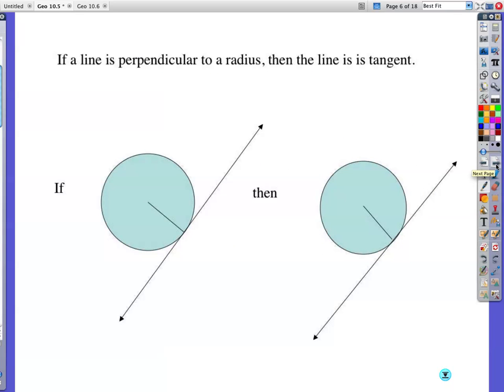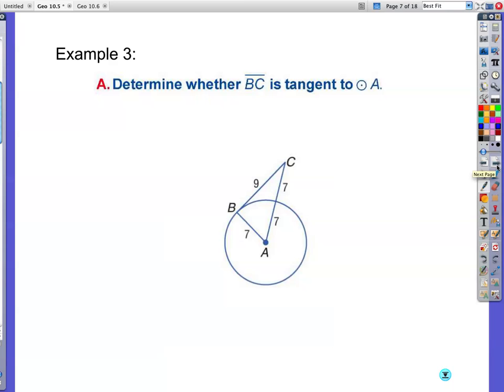If a line is perpendicular to a radius, so if they tell you, hey, there's a right angle there, there's your radius, there's your perpendicular or tangent line, and it just so happens to be perpendicular, then you can conclude that the line is tangent. So if you have this line that comes out, touches, and it happens to be perpendicular to the radius, then you can say the line is tangent. It's basically the converse of our previous rule.